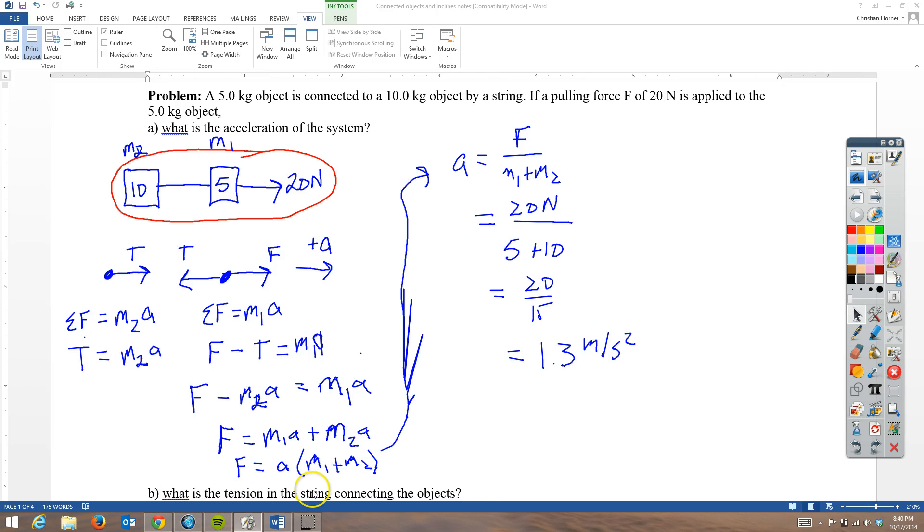The second thing that they ask is what is the tension in the string connecting the object. So I'll go ahead and do this one in red. It's really easy to see that we have a very simple equation for tension. And that simple equation for tension is T is equal to M2A. So let's go ahead and use that. We're going to say that tension is equal to the second mass times acceleration. Our second mass is 10 kilograms. And the acceleration was what we just solved for. That's 1.3 meters per second squared. And so a kilogram times a meter per second squared will give us our force or our tension, which is 13 newtons.